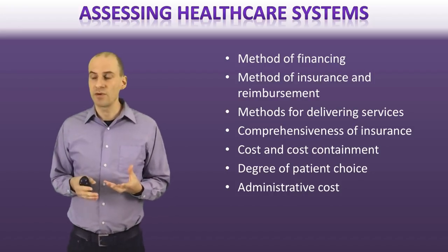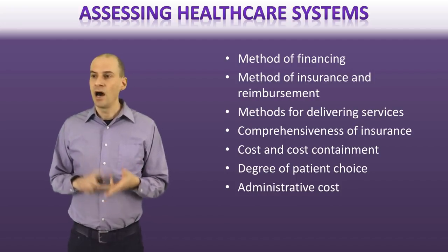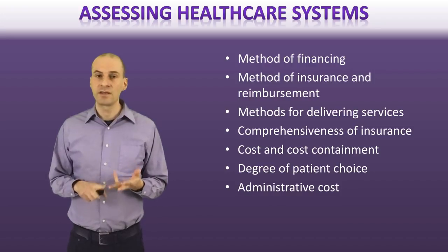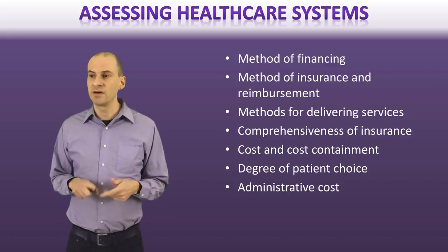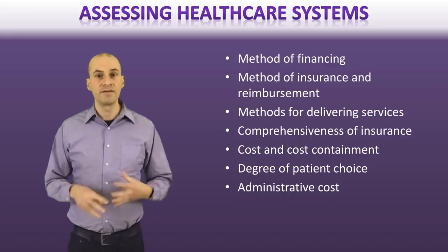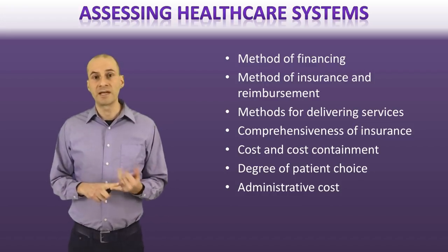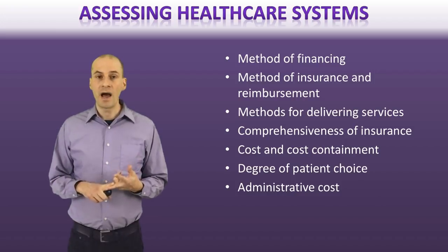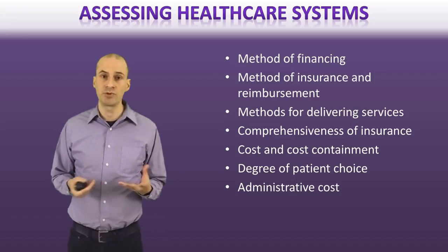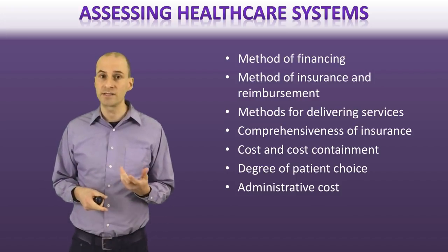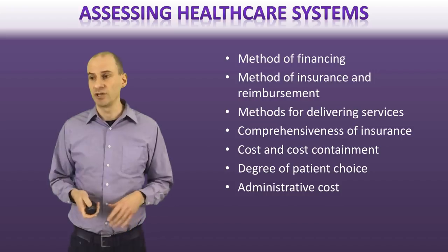There are a few different things we want to think about when we want to assess healthcare systems: how do we finance it, thinking about ways that we provide insurance and reimbursement, delivery of services, how comprehensive the insurance being offered is, ways we can improve costs and cost containment, how much choice we offer patients, and the different considerations with respect to administrative costs — which are actually really high in healthcare systems. We spend about 30% of our money in healthcare systems on administration, not even on the provision of healthcare itself.